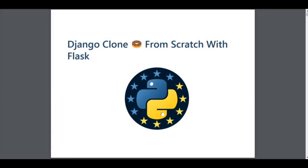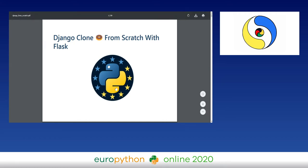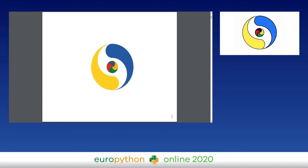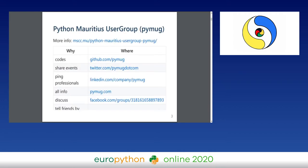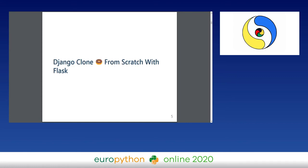Greetings and welcome everybody. This is a talk about Django — about building a Django clone from scratch with Flask. That is our Python user group's logo. I am from Mauritius, a small island in the Indian Ocean. Our user group is called PyMug, the Python User Group of Mauritius. I am Abdurrahman Jahangir, a Python programmer. You can find me on Twitter, GitHub, and also I'm a Flask organizing member.